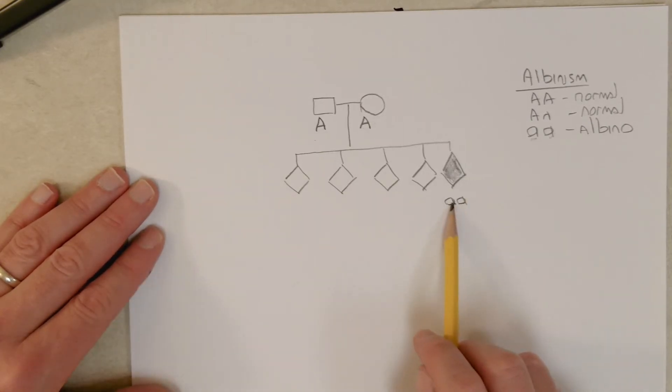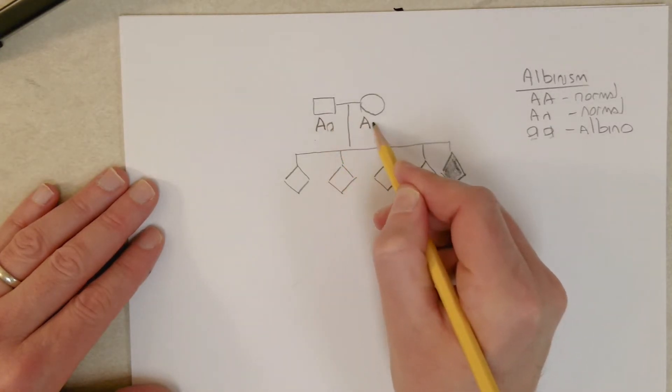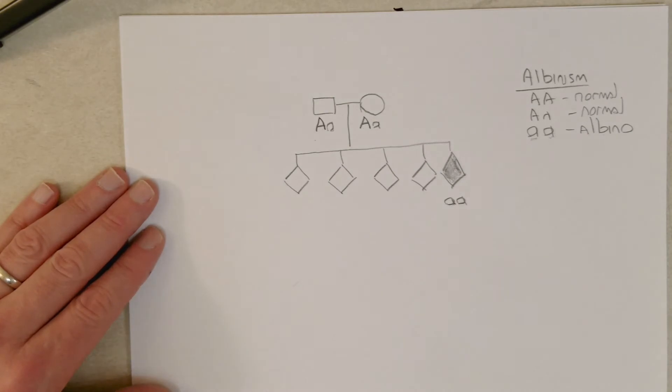Their child has albinism, and to have albinism he or she needs to get two little a's, one little a from each parent. So that means each parent must have a little a that they donated to that child to cause albinism. So we got the genotype of this child here and the genotypes of the parents.